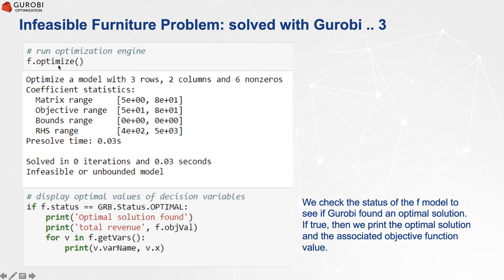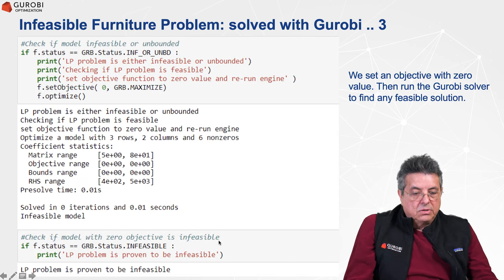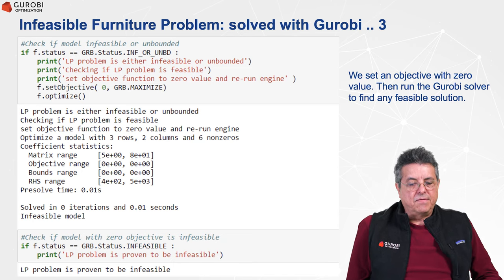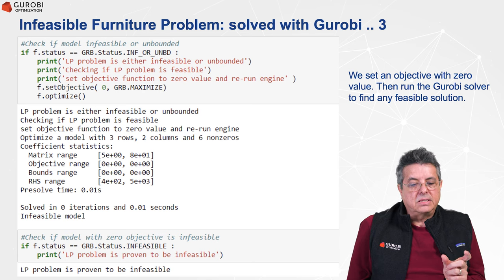We use the optimize method to solve this new problem. Gurobi works on it and in 0.03 seconds reports that the problem is either infeasible or unbounded, and has no solution to display. We then check whether the problem is infeasible or unbounded.